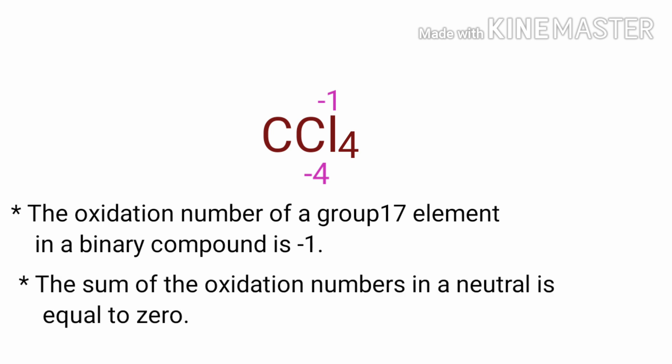As per rule, in a neutral compound, the numbers along the bottom must add up to zero. So the number under C must be plus four.